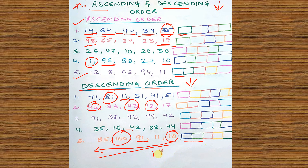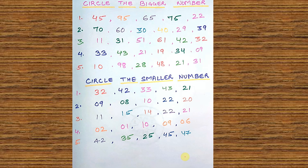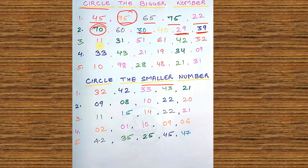Then this is descending order. If children know counting from 1 to 100 well, only then will they be able to solve it, otherwise they won't, and you will also get to know how well they actually know counting. Then circle the bigger number and circle the smaller number — try writing different numbers. They will circle and show — for example 95 — there could be confusion, and from that confusion you will know how much they have understood. I have written close numbers like 39 and 30, or 70, so children get slightly confused and you can assess their understanding.